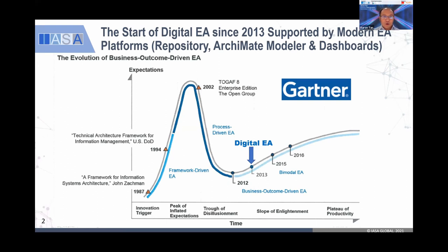Basically, in terms of the stock market analogy, the market crashed — whatever you invested in the blue chip, you'd guarantee losing money. The same thing with architecture. But after that, it turned up. Now the curve is going up, and somewhere in 2013, the digital EA concepts were being introduced.